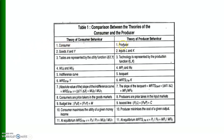In consumption theory we usually take the example of two goods X and Y, whereas in production theory we take the example of two inputs, labor and capital. Consumer tastes and preferences are represented by the utility function U = f(X, Y), while technology is represented by the production function Q = f(L, K).